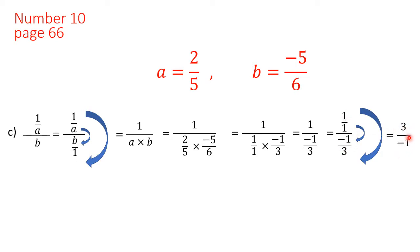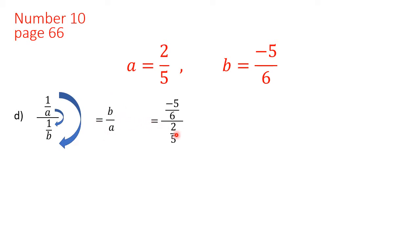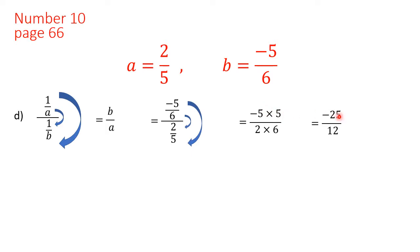Multiplying the farthest by each other and the closest by each other gives 3 over minus 1, which is minus 3. For the final example, 1 over a over 1 over b is already in the form of a complex fraction. Multiplying the farthest and closest gives b over a. Substituting, we get minus 5 over 6 divided by 2 over 5, which gives minus 5 times 5 in the numerator and 6 times 2 in the denominator. There is nothing to simplify, so the result is minus 25 over 12.